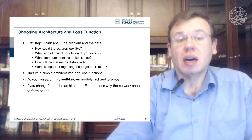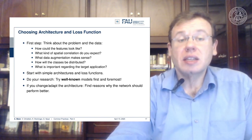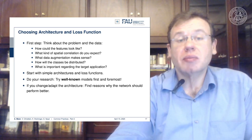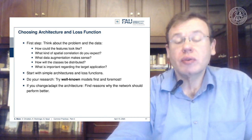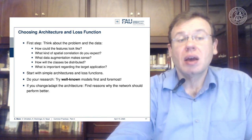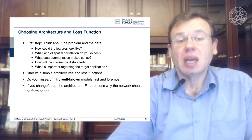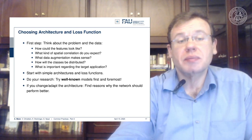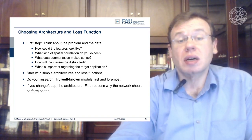Now let's choose architecture and loss function. The first step is to think about the problem and the data: how could features look? What kind of spatial correlation do you expect? What data augmentation makes sense? How will the classes be distributed? What is important regarding the target application?